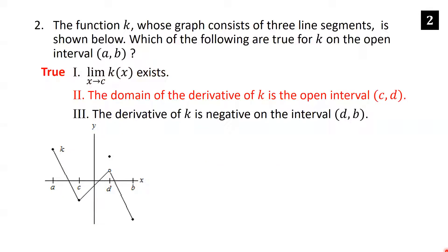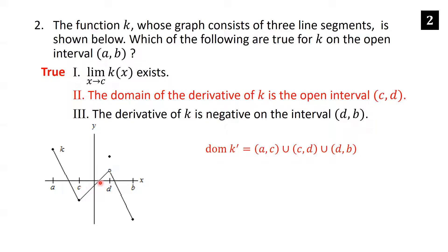Second statement: the domain of the derivative of k is the open interval (c, d). This is false — the domain of the derivative is actually much more than that. It includes (a, c), (c, d), and (d, b). The only places excluded are c, where there is a sharp edge causing non-differentiability, and d, where there is a discontinuity. So the second statement is false. Third: the derivative of k is negative on (d, b). Since k is decreasing on (d, b), the derivative is negative there — so the third statement is true.